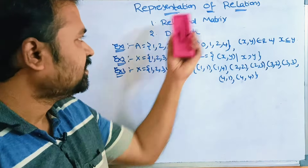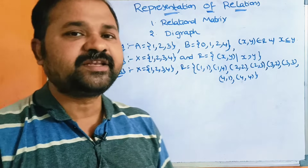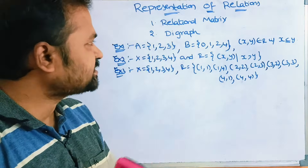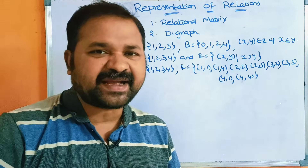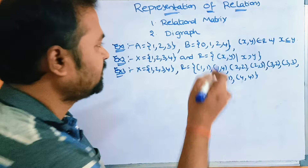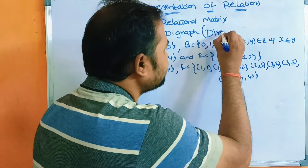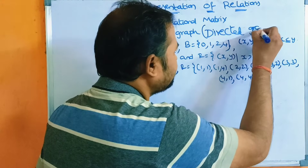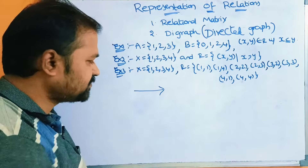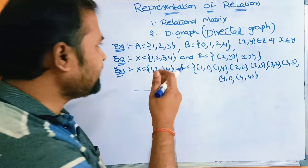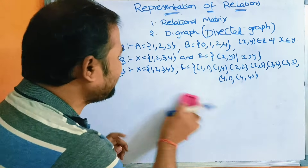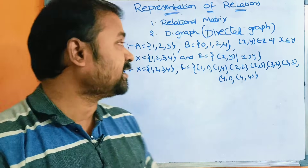Let us discuss the representation of relations in discrete mathematics. We can represent relations mainly in two ways. The first approach is the relational matrix, which is a matrix representation of the relations. The second approach is the digraph, meaning directed graph, where there are edges from the source vertex to the destination vertex, as opposed to an undirected graph.